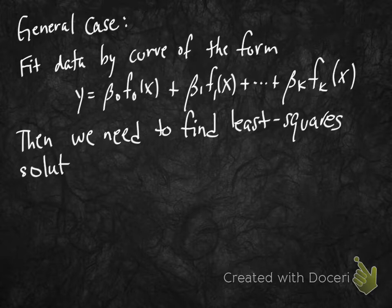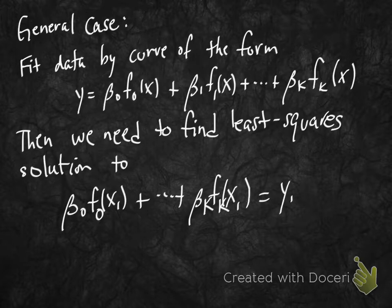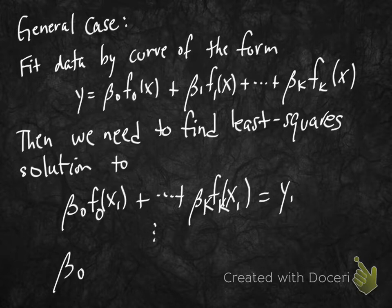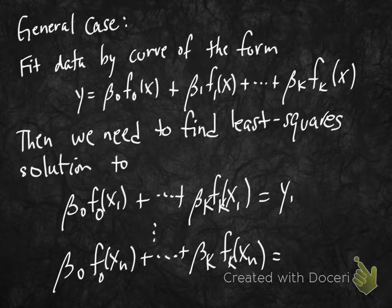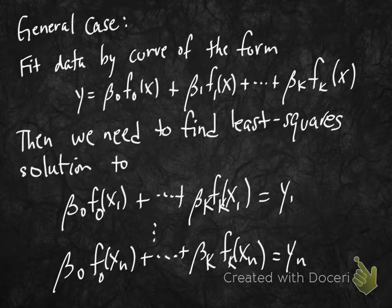We need to find a least squares solution to the linear system: β₀f₀(x₁) + … + βₖfₖ(x₁) = y₁, and so on down to β₀f₀(xₙ) + … + βₖfₖ(xₙ) = yₙ. This is a massive linear system with n equations and k+1 unknowns — β₀ through βₖ — that we're going to find a least squares solution to.